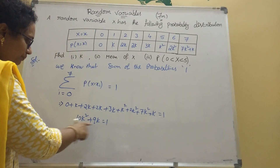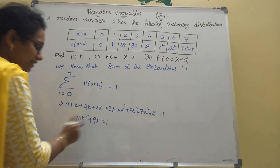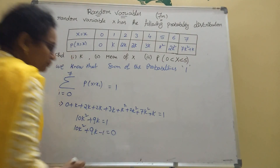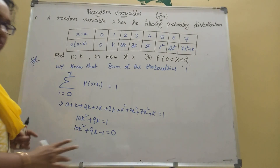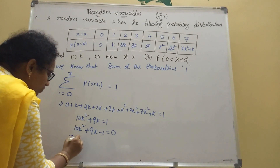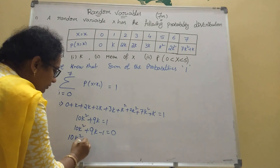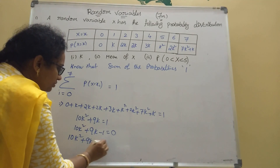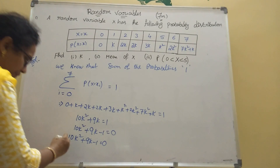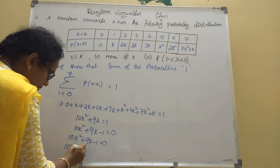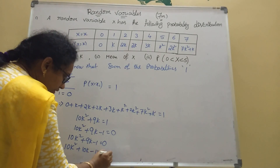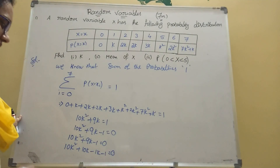Moving the 1 to the left side: 10k-squared plus 9k minus 1 equals zero. Since 10 ones are 10, and 10 minus 1 is 9, we split the middle term as 10k minus 1k, giving 10k-squared plus 10k minus k minus 1 equals zero.